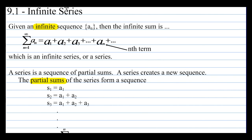Section 9-1: Infinite Series. Given an infinite sequence, the infinite sum is represented using summation notation for summing an infinite number of terms. You could have a sub 1 plus a sub 2 plus a sub 3, continuing through the nth term and all the way to infinity — this is called an infinite series, or simply a series.